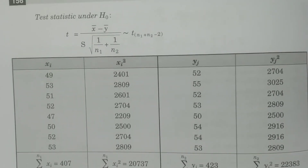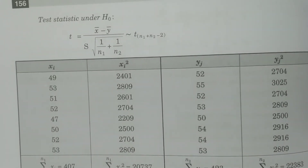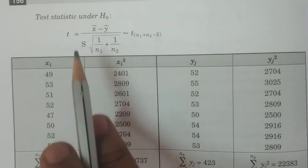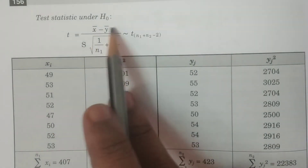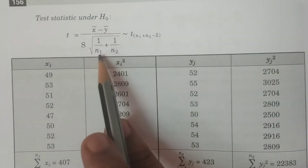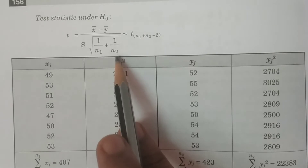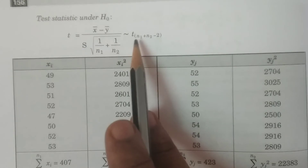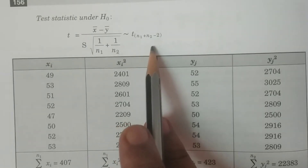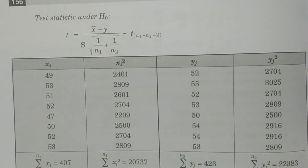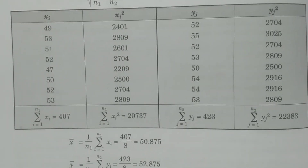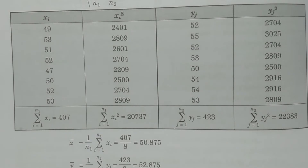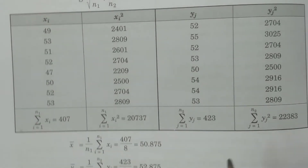The test statistic under H0 is: t = (x̄ − ȳ) / (S × √(1/n1 + 1/n2)), which follows t with n1 + n2 − 2 degrees of freedom. Because σ1 and σ2 are not known, we need to calculate the sample values: x̄, ȳ, s1², s2², etc.